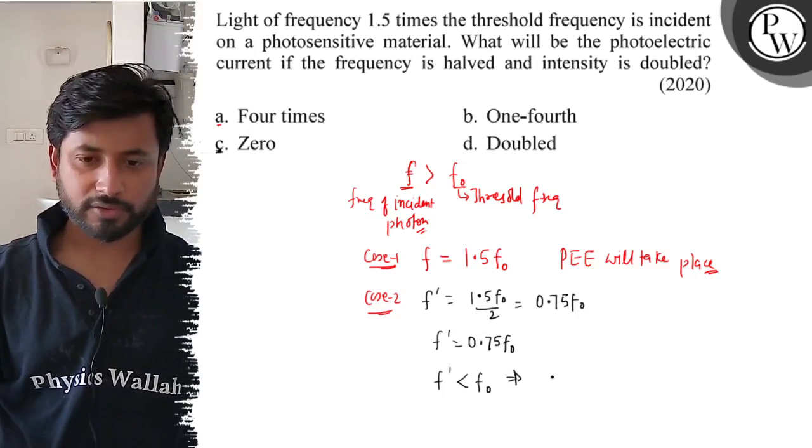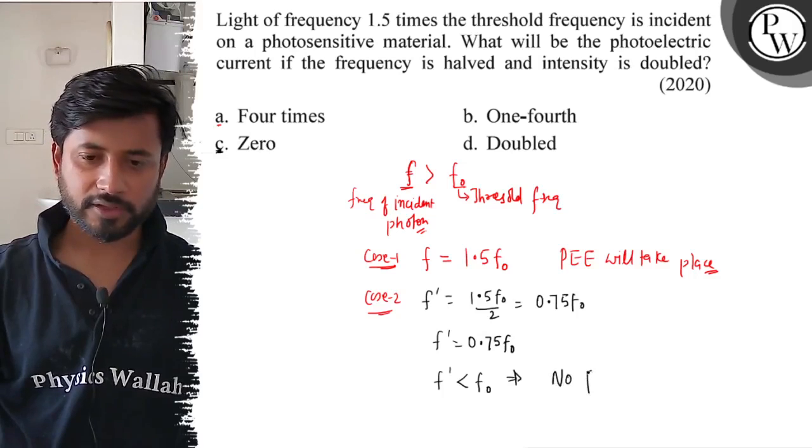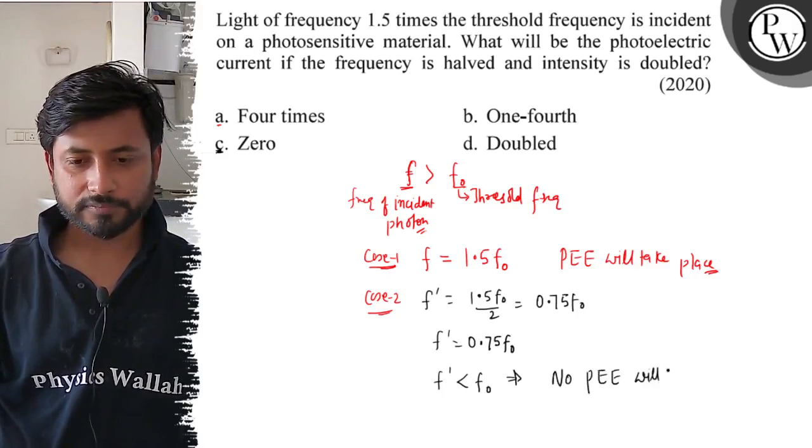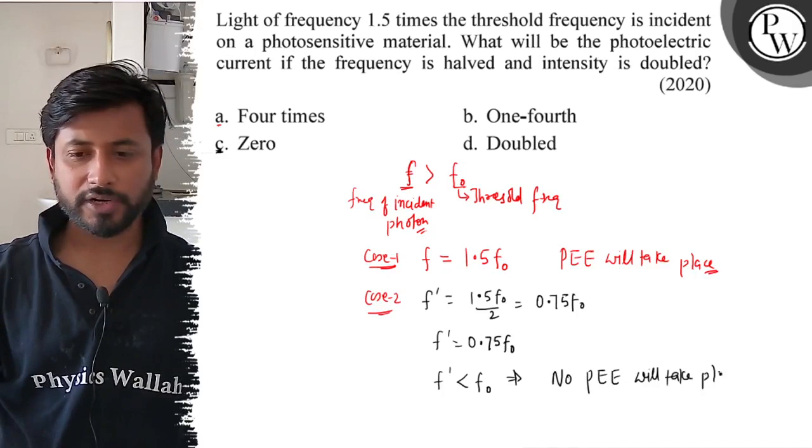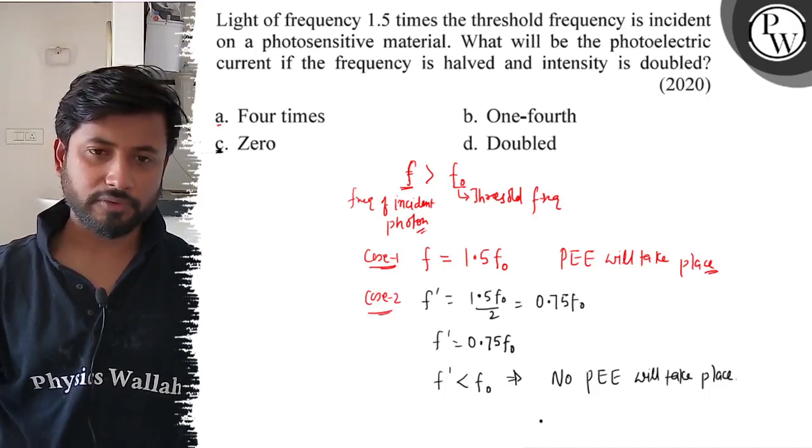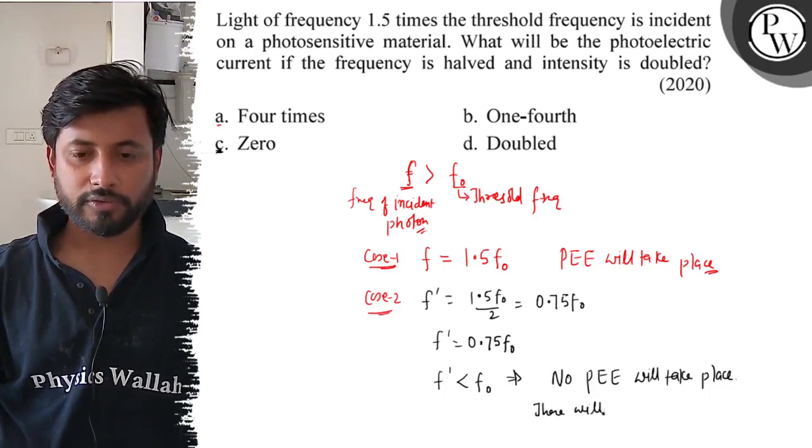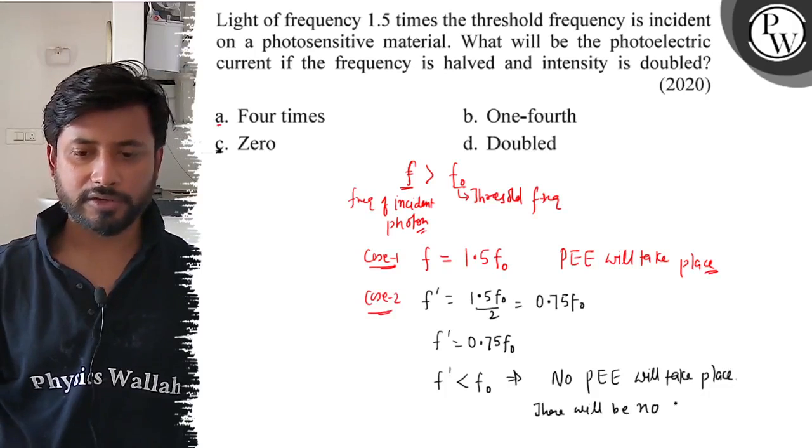This means there will be no photoelectric effect, no photoelectric emission will take place. And if there is no photoelectric emission, that means no current, there will be no current.